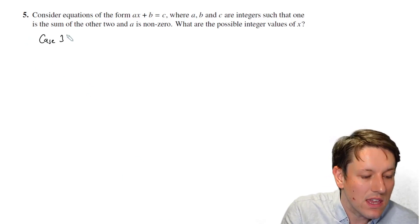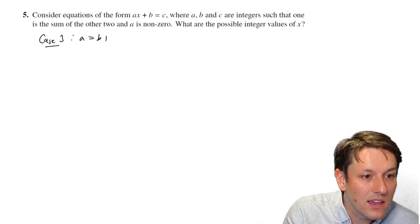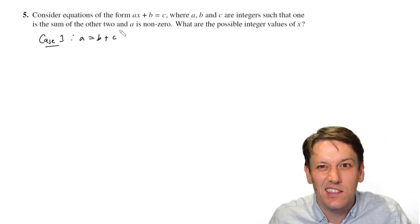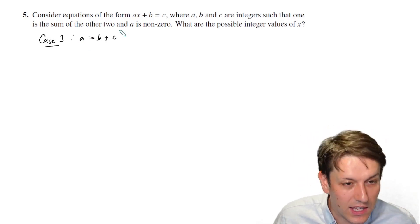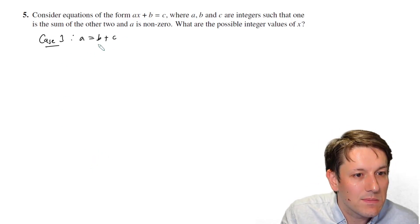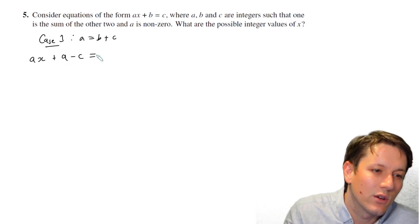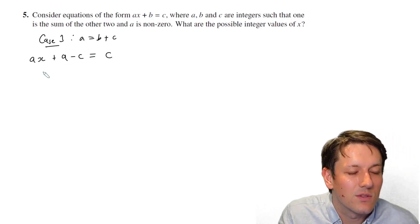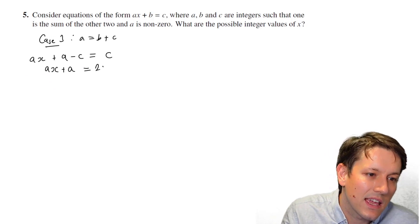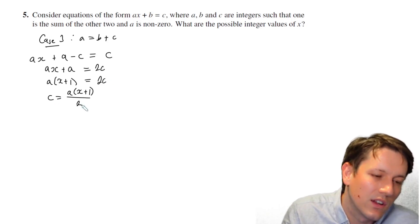In case three, where we've got a equals b plus c, it's actually possible to make any value of x work. So if a is b plus c, let's substitute for b this time. If b is going to be a minus c, so I've got ax plus a equals 2c. And this gives me a times (x plus 1) equals 2c. I'm just going to write this as c equals a times (x plus 1) over 2.